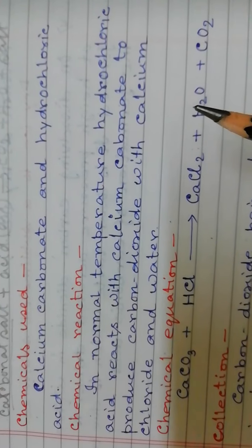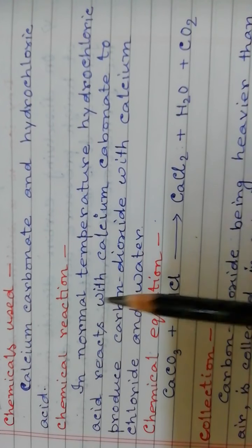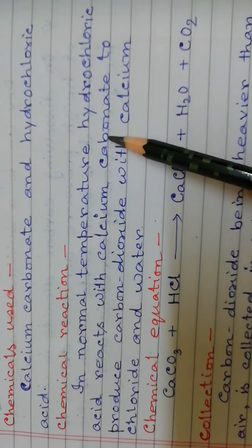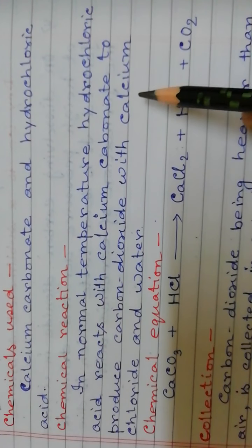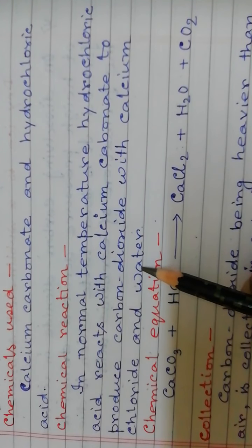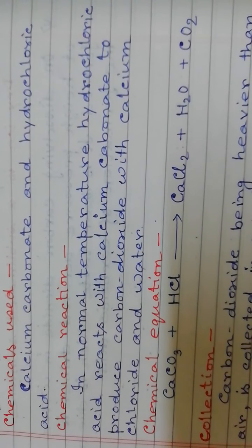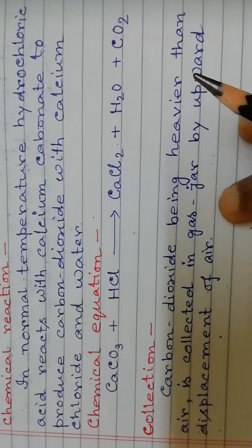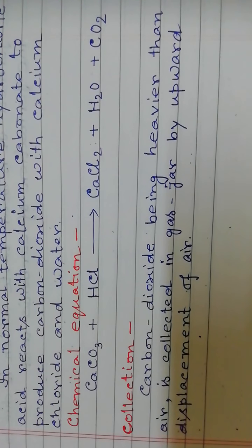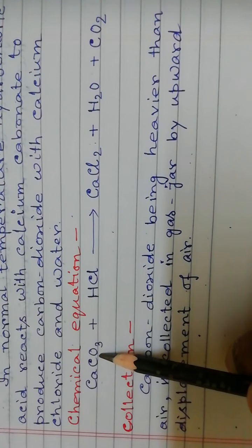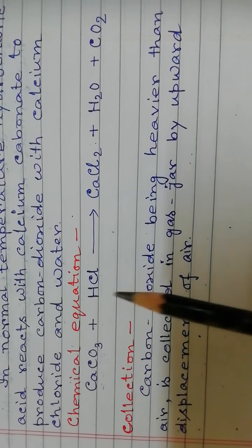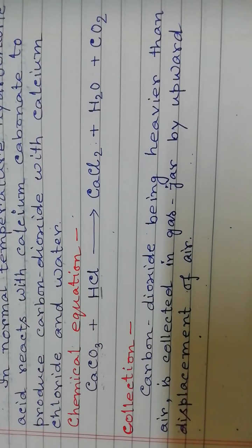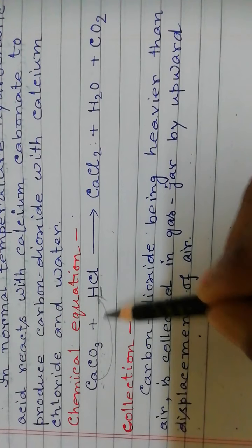Now the chemical reaction. At normal temperature, hydrochloric acid reacts with calcium carbonate to produce carbon dioxide. Calcium chloride and water are also produced. In the reaction, the hydrogen of hydrochloric acid is replaced by calcium.